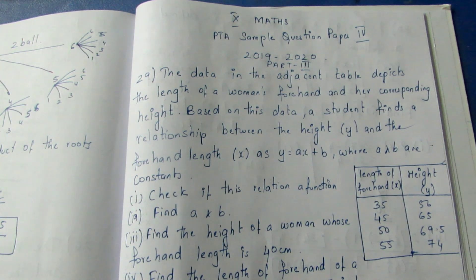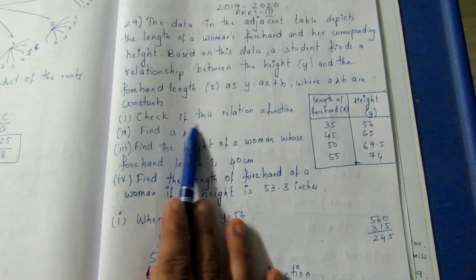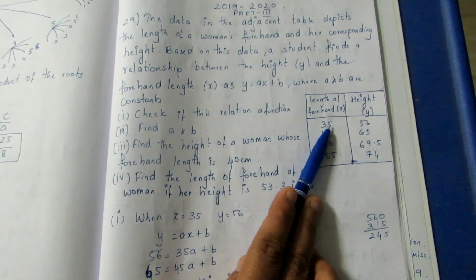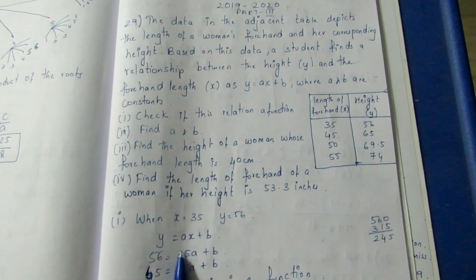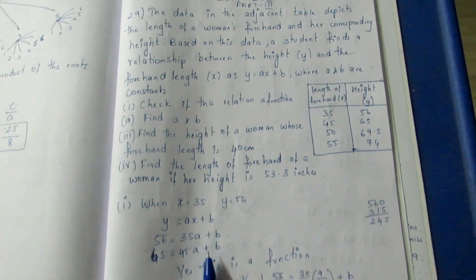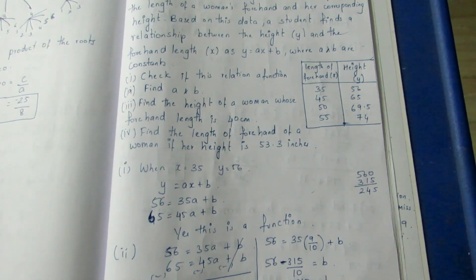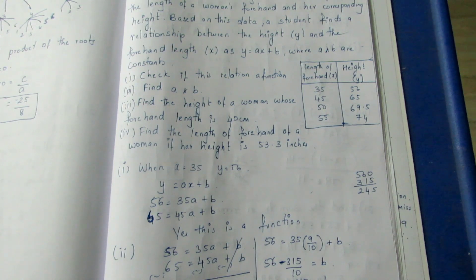First, we check if this is a function. The relation is a function. If we substitute the formula, it is a 1-to-1 function and it exists. It is a 1-to-1 function because a and b are the same constants but x and y are different variables.